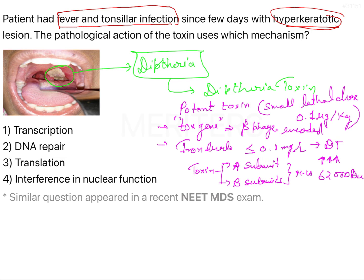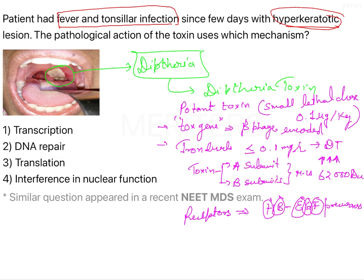The receptors for diphtheria toxin are the heparin-binding epidermal growth factor (HB-EGF) precursors. All cells are susceptible to the action of diphtheria toxin.